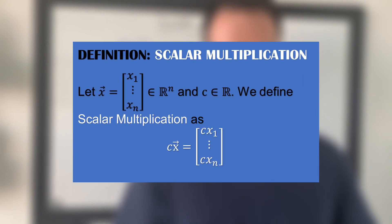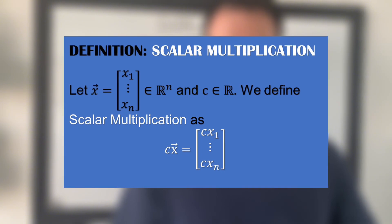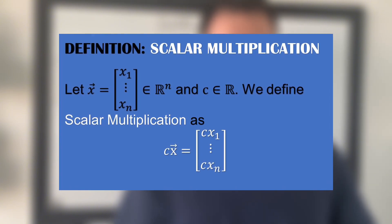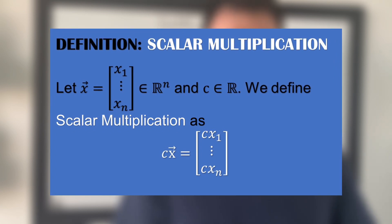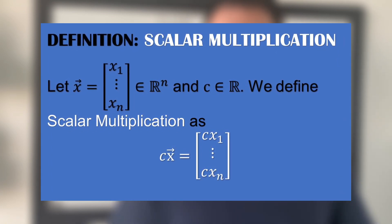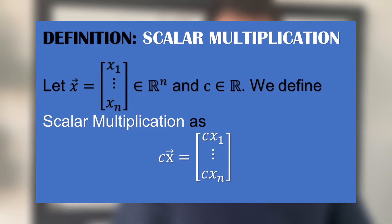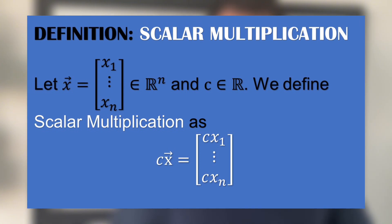Let X be a vector in Rn and C be an element of the real numbers. We define scalar multiplication to be C times the vector X is equal to a new vector where each of the elements is multiplied by C. So, the first element is CX1 and the last element is CXn.